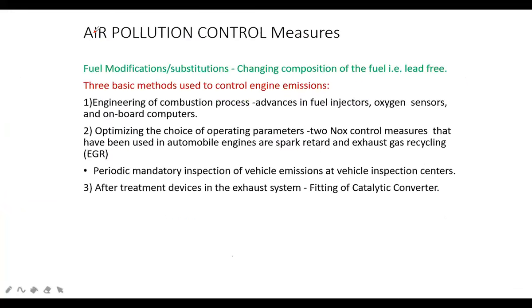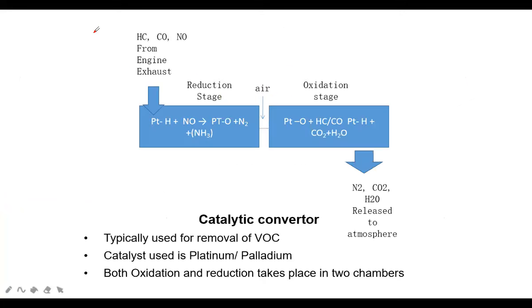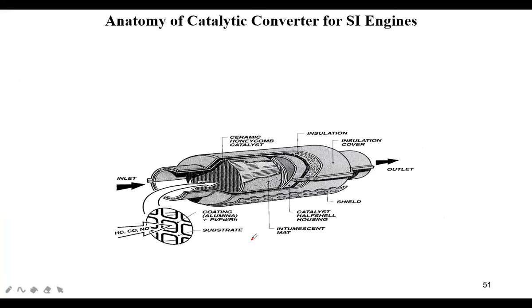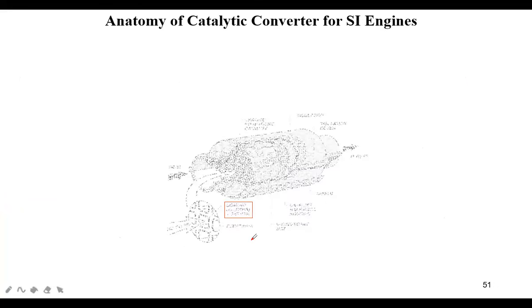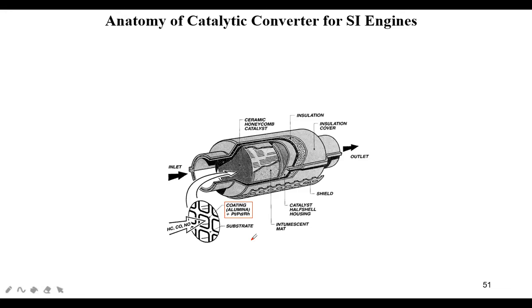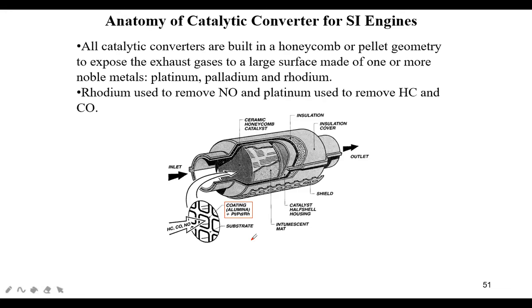For air pollution control in automobiles, as a mechanical engineer you should know the fundamentals. Catalytic converters are used to remove VOCs. The catalyst used is typically platinum, which is used to remove VOCs. You can go through this material - we are just giving a glimpse of what is there.